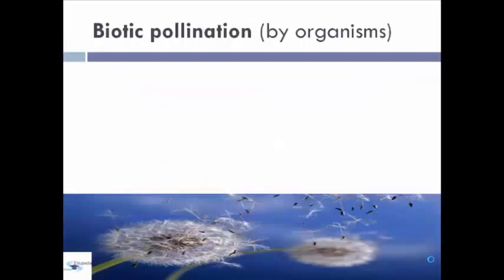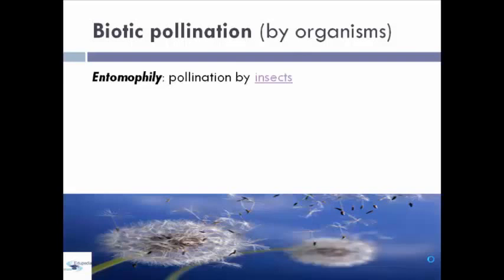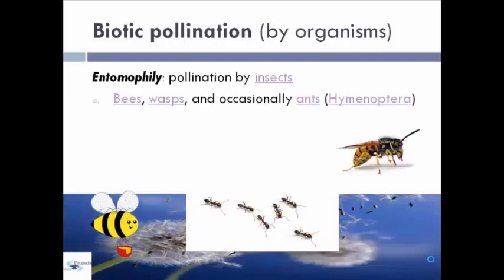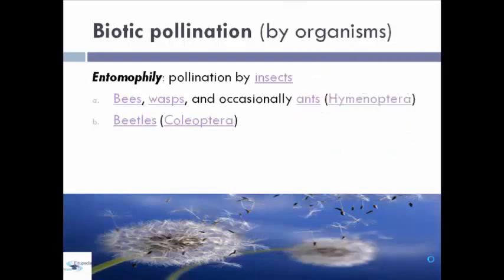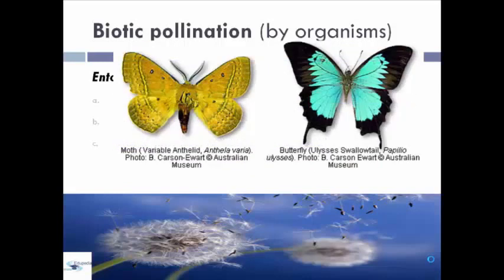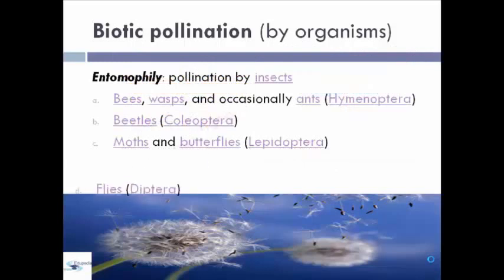First, we have biotic pollination by using organisms. Biotic pollination includes entomophily, which is pollination by insects. Classified under this: first, we have the bees, wasps, and occasionally ants. The second one, we have the beetles or coleoptera. Next, we have the moths and butterflies. And next, we have the flies or diptera. In this case, we have four for entomophily.